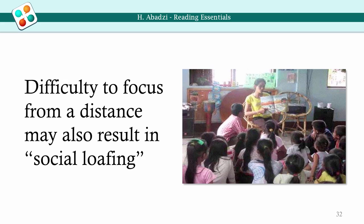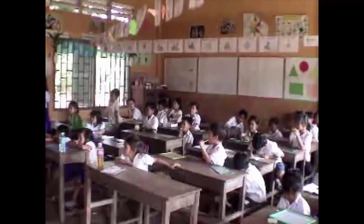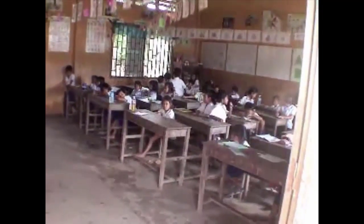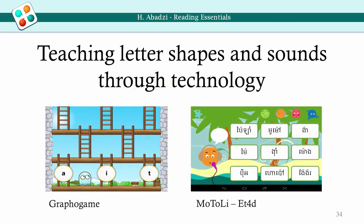Watch this short video from Cambodia and observe the children in the back of the classroom. Imagine that you had to share textbooks — would you have the chance to look at the text as long as needed? In principle, textbooks could be superseded by digital devices. Information technology is very promising in basic literacy, and trials are underway by several NGOs. One example is the Finnish Grapho Game, and another is Motoli, adapted to Khmer.